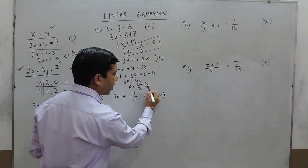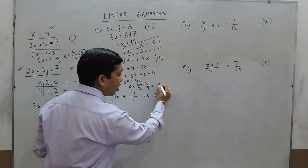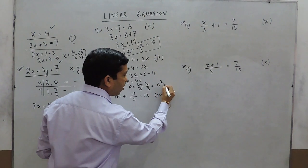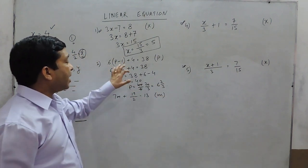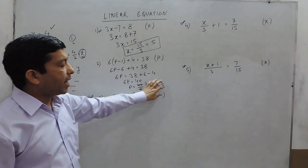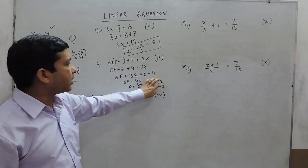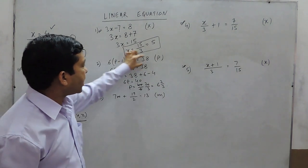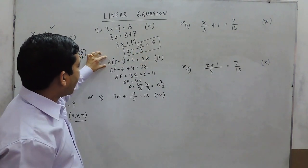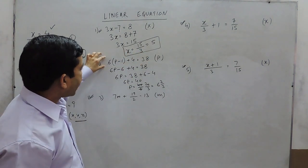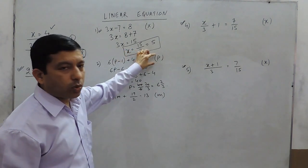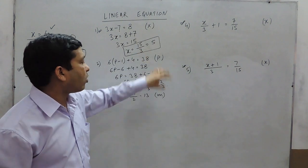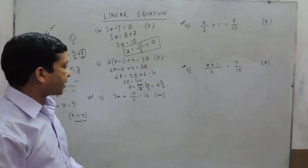The value of p becomes 40 upon 6, which can be cancelled to 20 upon 3. So if the value of p is 20 upon 3, the left hand side should equal the right hand side of the equation.